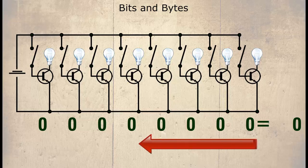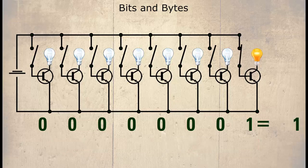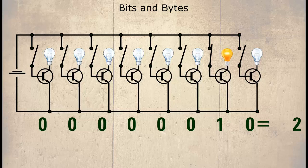Remember we are working from right to left. The next state would be 00000001, which would be decimal one. Next, 00000010 or decimal two. Next is 00000011 or decimal three.